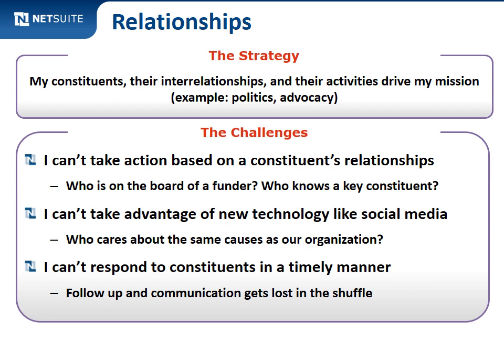The challenges the relationship strategy solves: I can't take action based on constituents' relationships — for example, these guys are on the board of a funder, they should look at my proposal before I send it in. I can't take advantage of new technology like social media, which is very relationship-based — can I get this constituent to send out my message because they know lots of people I want to reach? I can't respond to constituents in a timely manner. You don't know what relationships your organization has with constituents, so people get lost in the shuffle, there are missed follow-ups and dropped communications.